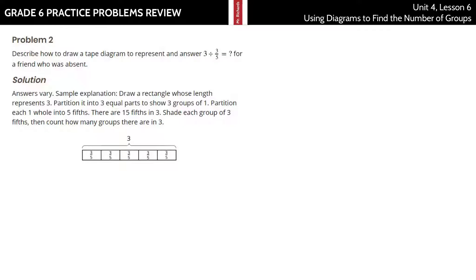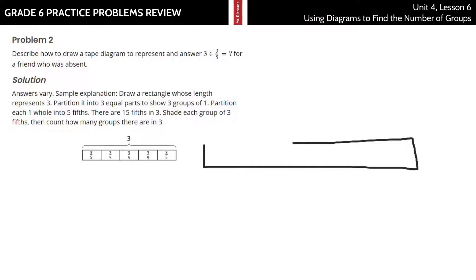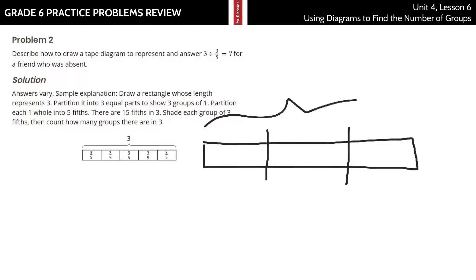Now, describe how to draw a tape diagram to represent and answer 3 divided by 3/5 for a friend who is absent. Let's try another one. If you were absent, you might look at that and wonder what's going on. If this whole thing represents 3, then here's 1, 2, and 3.